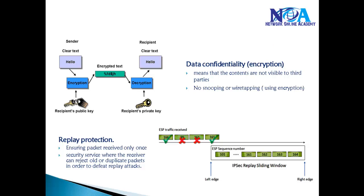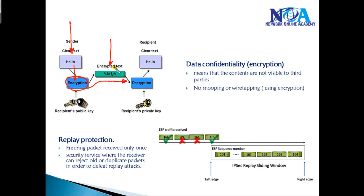IPSec also provides data confidentiality, ensuring that no one can read the information. IPSec VPN supports encryption algorithms that completely encrypt your information into an unreadable format, so even if someone captures this information they will not be able to figure out the exact text. On the remote end, keys are used to extract the clear text again, ensuring that data is not visible to any third parties — no snooping or wiretapping.